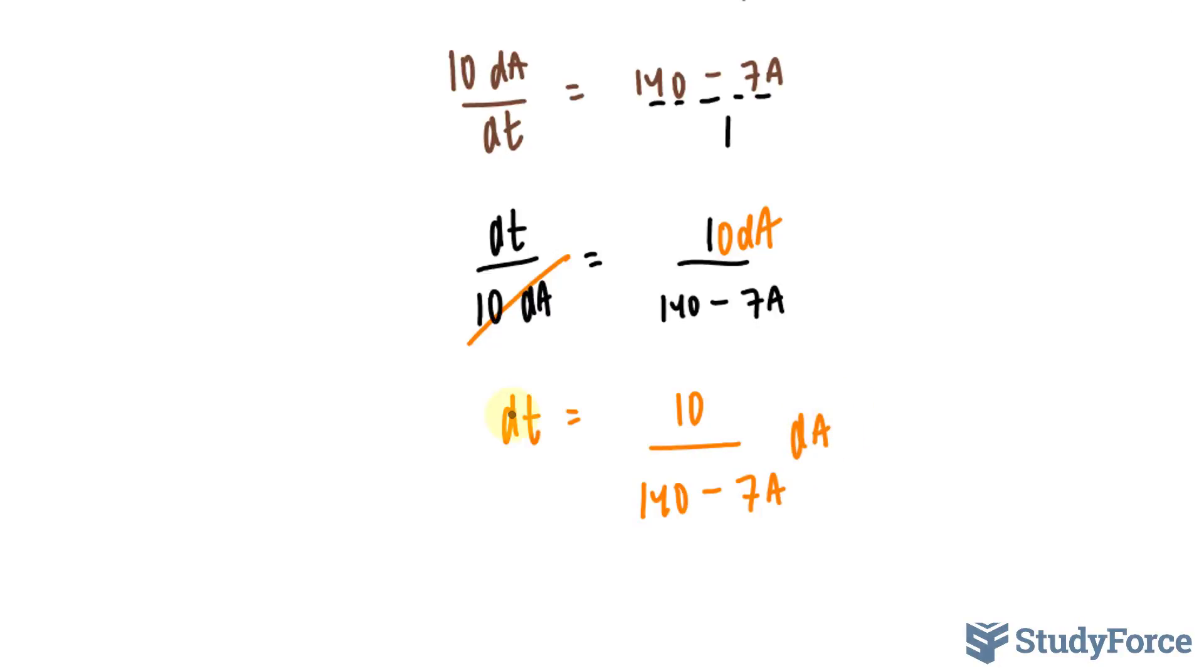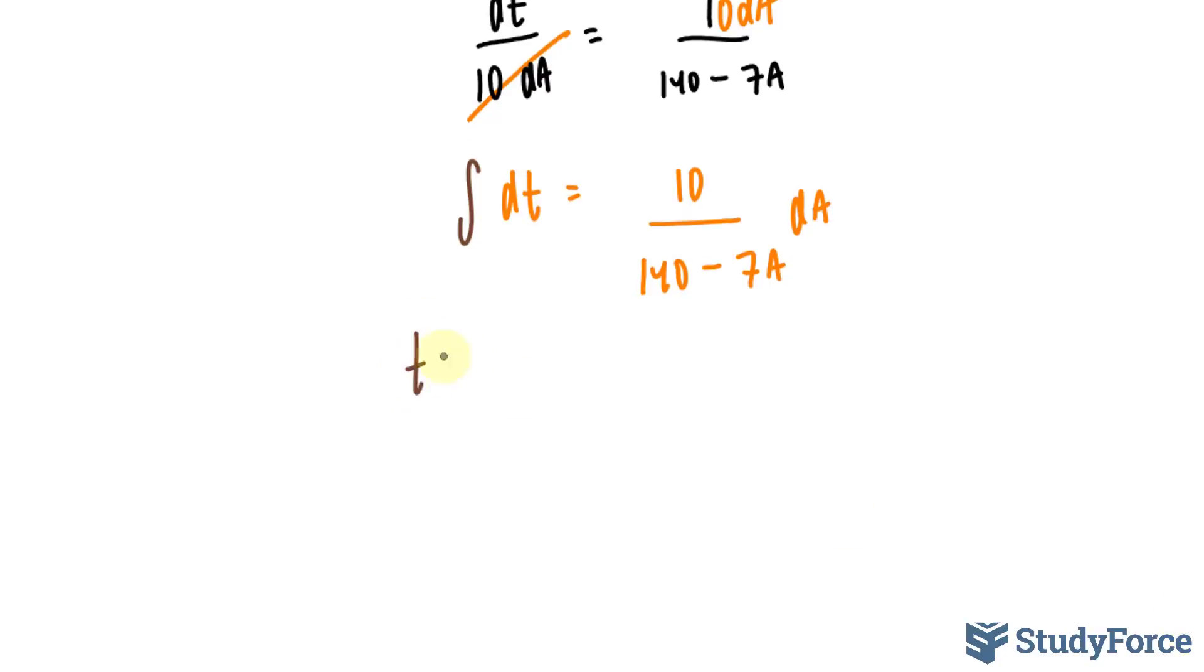Now I can integrate both sides. If I integrate the left side, I end up with simply t plus c. I'm placing the constant here because this expression is with respect to t. Is equal to, I'll take the 10 outside of the integral. 10 times 1 over 140 minus 7A dA.